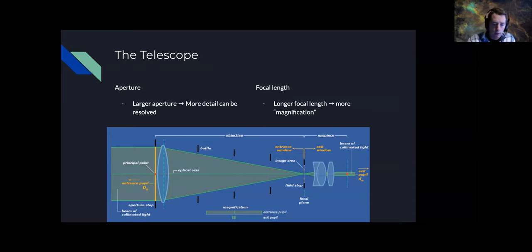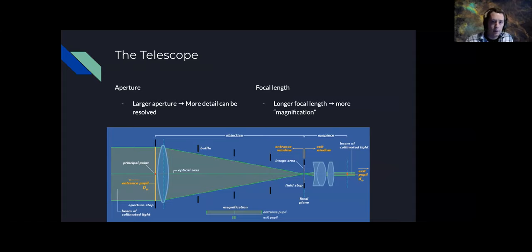Both aperture and focal length are sensitive to different things. A larger aperture means you can more finely resolve smaller things, because there's less of a diffraction limit on the size of stars, so you can image with higher resolution.